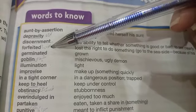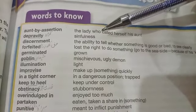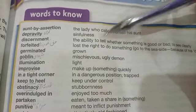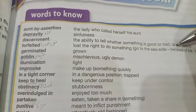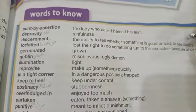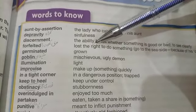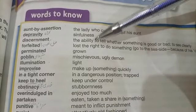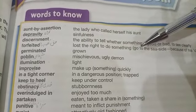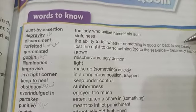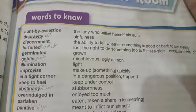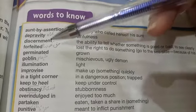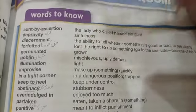Third word: 'discernment' means the ability to tell whether something is good or bad — to see clearly. That ability by which you can tell which thing is correct and which is wrong. That ability is discernment.